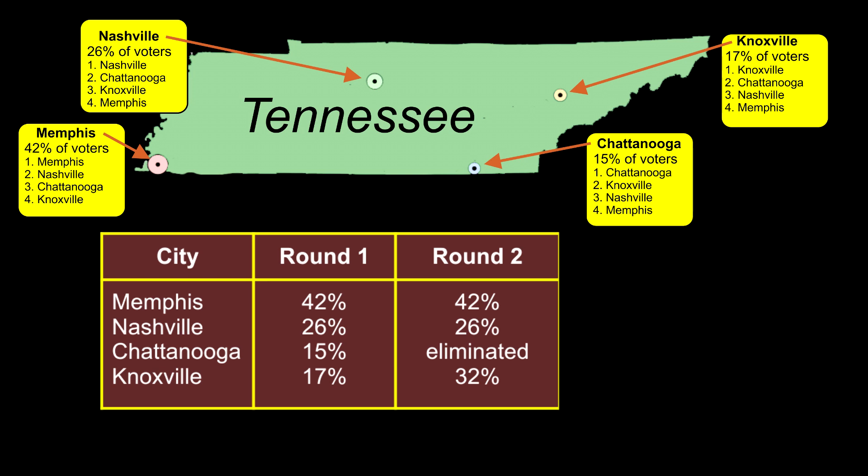In this case, Knoxville is the second choice of the Chattanooga voters, because it's the second closest city to them. The algorithm causes Knoxville's total to go up by 15%, and you get this table. The second round still finds Memphis in first place, but without the 50% to be called a winner. Knoxville is now in second, and Nashville has moved down to third place.